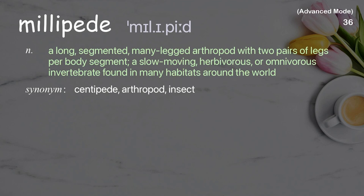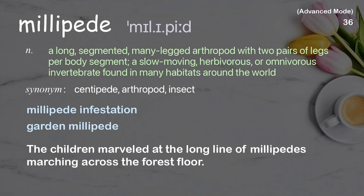Millipede: A long, segmented, many-legged arthropod with two pairs of legs per body segment; a slow-moving, herbivorous or omnivorous invertebrate found in many habitats around the world. Examples: Millipede infestation, Garden millipede. The children marveled at the long line of millipedes marching across the forest floor.